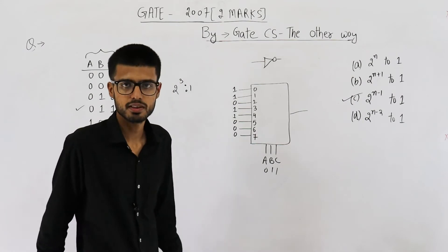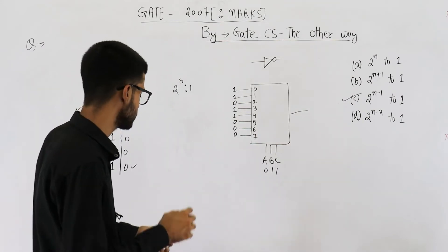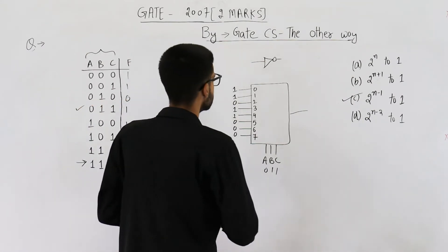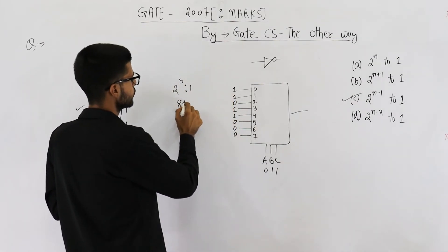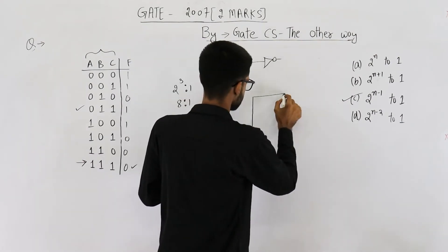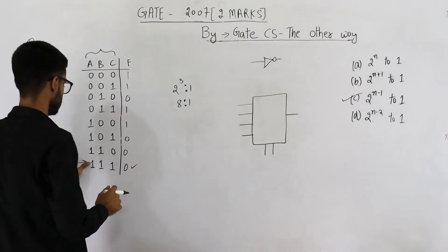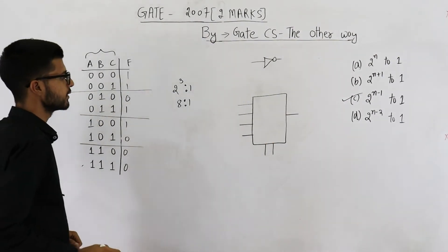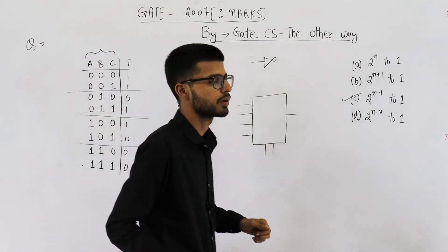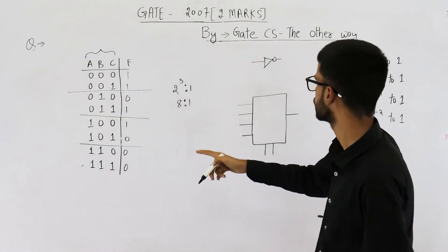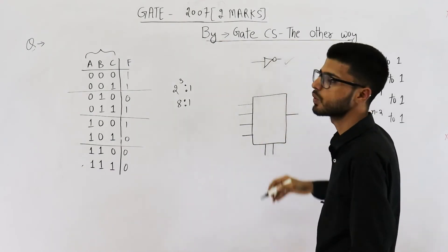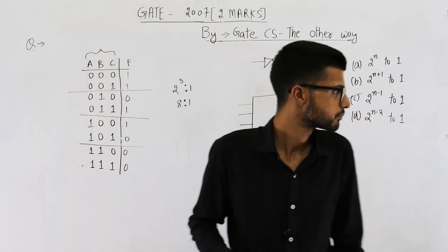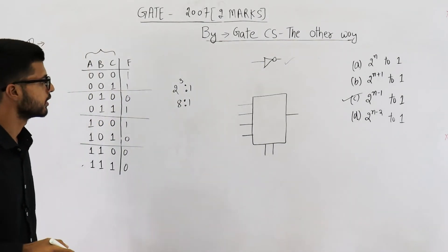Now let's try to reduce the size of this mux. That means now we want to go with four ratio one mux. This was a eight ratio one. You can see I've drawn a four ratio one mux here. To implement this function using four ratio one mux. You will also require this inverter gate. Let us see how will it be done.